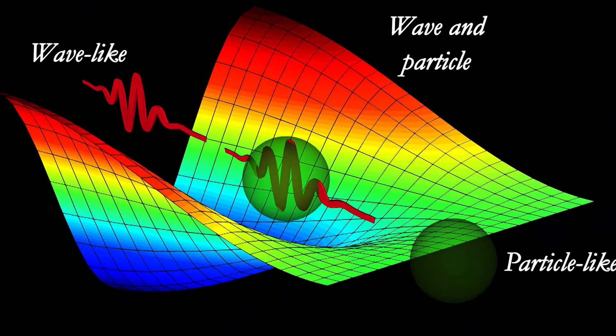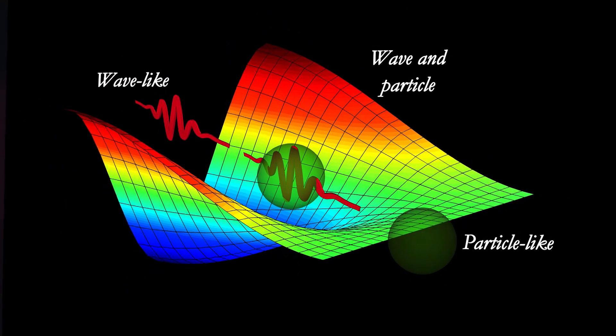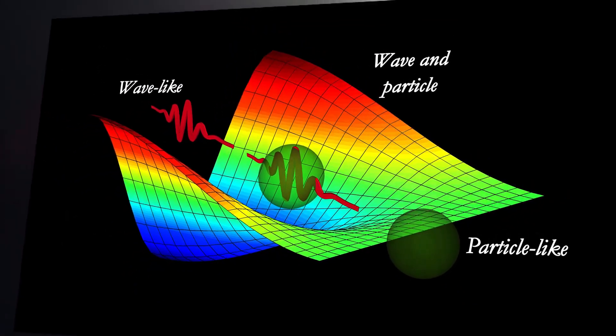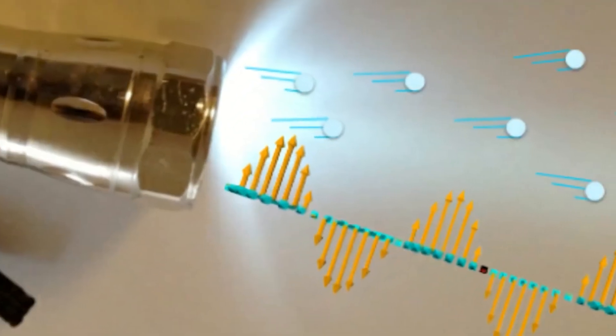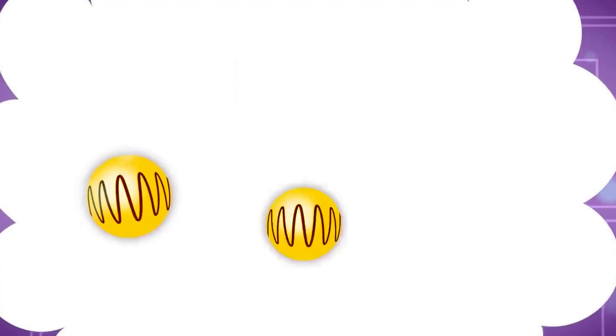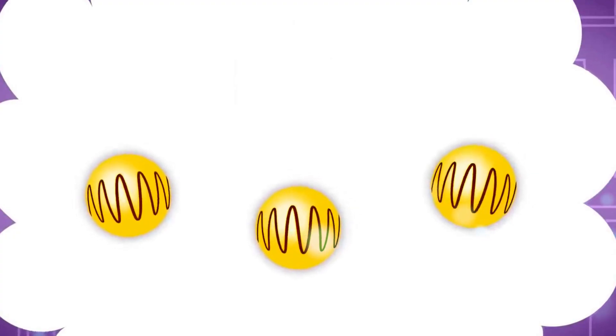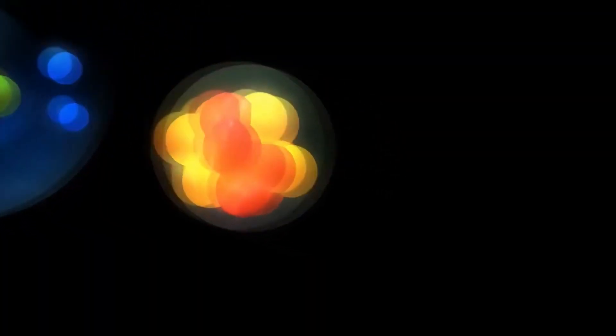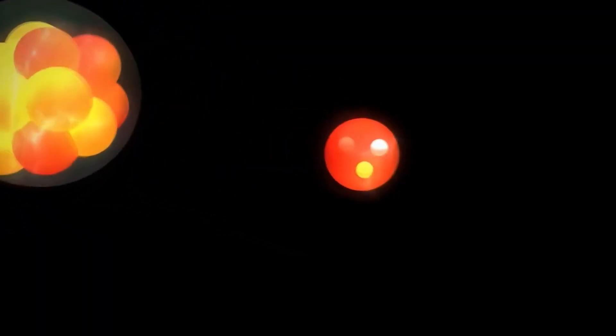The dual nature of quantum entities, acting as both particles and waves, is another cornerstone of quantum mechanics. Light, for example, can behave like a wave, interfering and creating patterns of light and dark, or like a stream of particles, photons, that can knock electrons out of their orbits. This wave-particle duality is a quintessential quantum conundrum, challenging our classical intuitions about the nature of reality.